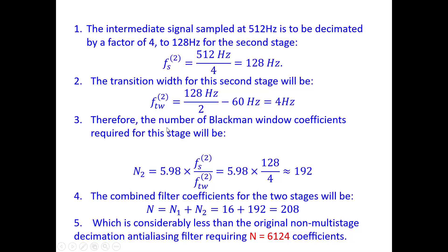Calculating the filter coefficient requirements for the second stage using the Blackman window: N2 = 5.98 × 128 / 4, where the sampling frequency is 128 hertz and the transition width is 4 hertz. This gives a value of 192 for the second stage. The first stage had N1 = 16, so the total filter coefficients for both stages combined is N = N1 + N2 = 16 + 192 = 208.